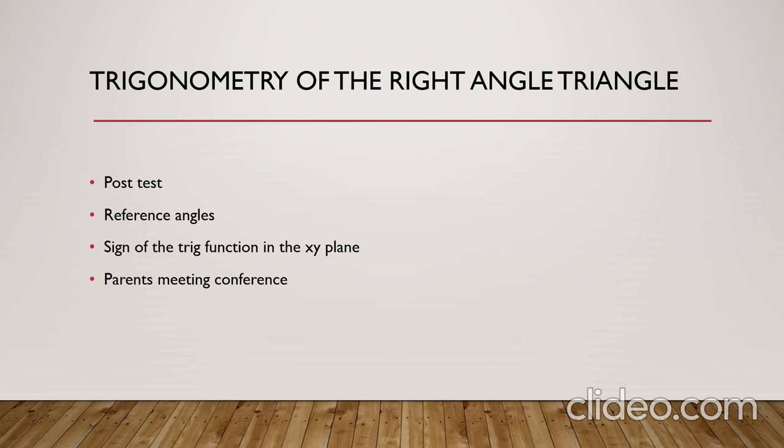For example, sine, cosine, and tan in the first quadrant are positive. All the other trigonometric functions are negative except for the sine in the second quadrant.